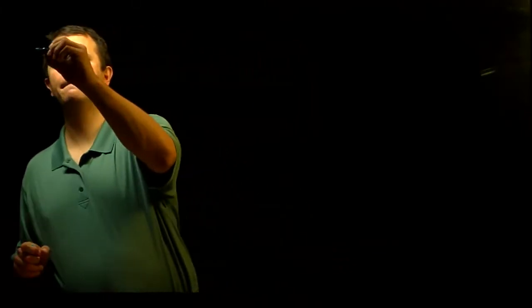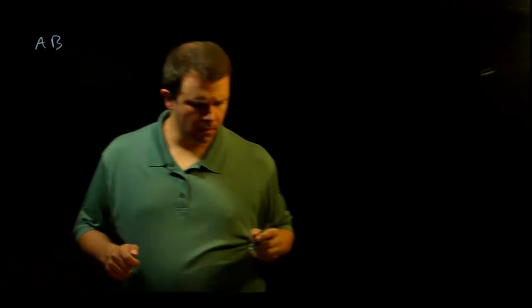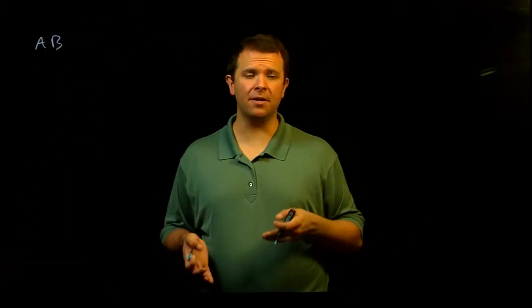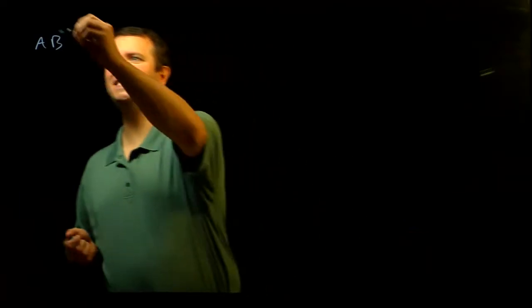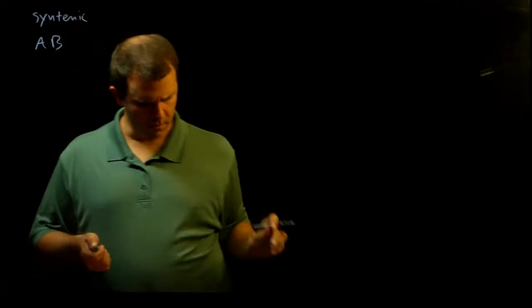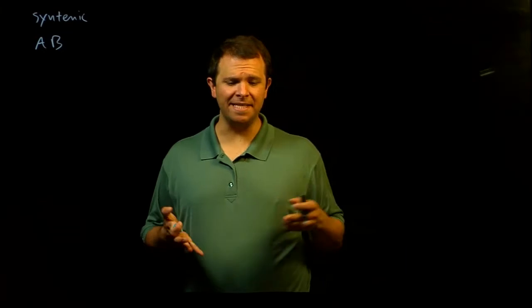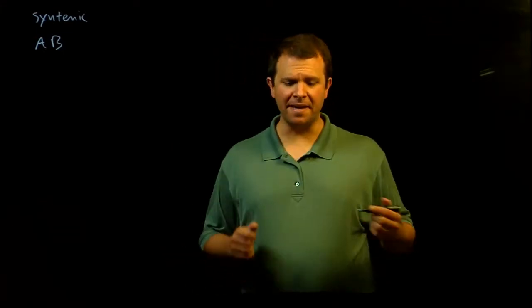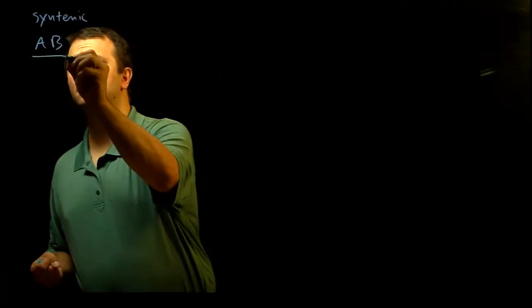Let's begin by considering two genes that are on the same chromosome, A and B. We say that two genes that are on the same chromosome are syntenic, and we can write that these two genes are syntenic by using a slash or a bar like this.